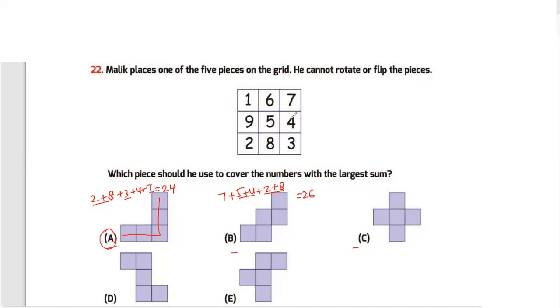For option C, the numbers are 6, 5, 8, 9, 4 — that gives 6 plus 5 is 11, plus 9 is 20, plus 8 plus 4 is 12, totaling 32.